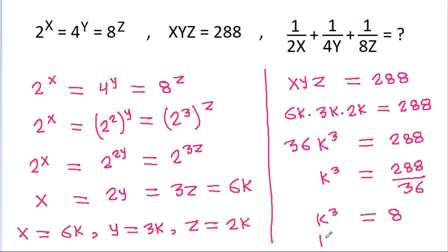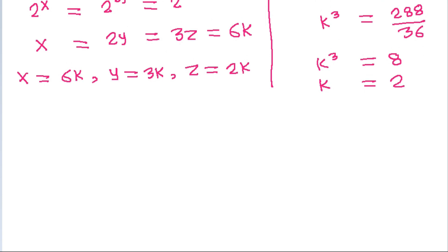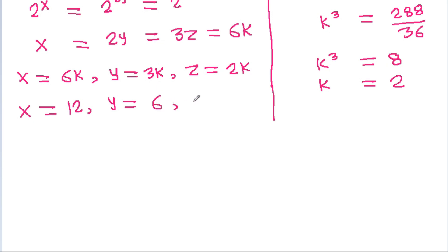So k cubed equals 8, and k will be equal to 2. And x will be equal to 6 times 2, that will be 12, and y will be equal to 3 times 2, that will be 6, and g will be equal to 2 times 2, that will be 4.